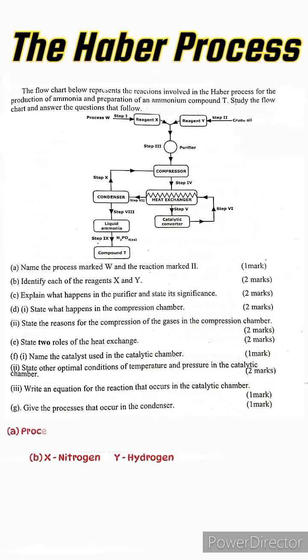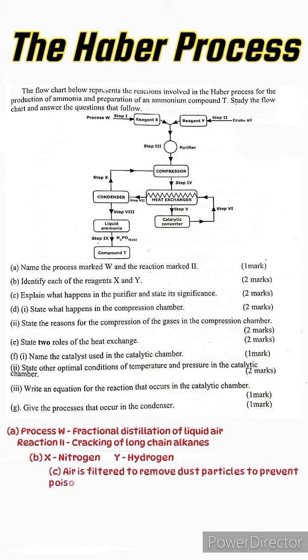Moving on to part b: Identify each of the reagents X and Y. We have already done so. Part c: Explain what happens in the purifier and state its significance. In the purifier, the air is filtered in order to remove any dust particles. This is very important so as to avoid poisoning of the catalyst.